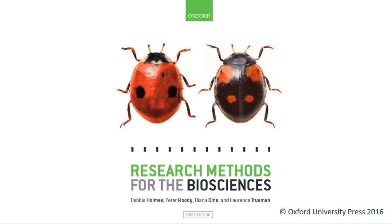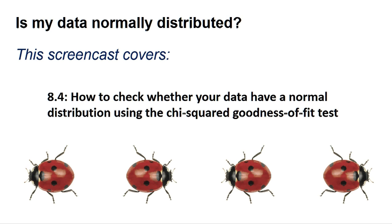Hello, welcome to another Research Methods for the Biosciences screencast for SPSS. This screencast gives you some advice on judging if your data is normally distributed and includes section 8.4: how to check whether your data have a normal distribution using the chi-squared goodness-of-fit test.